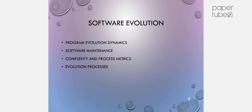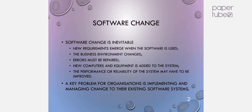KTO S5 CAC Management of Software Systems, Module 3: Continuation of Software Evolution. Topics include Program Evolution Dynamics, Software Maintenance, Complexity and Process Metrics, and the Evolution Process.